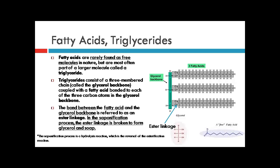Fatty acids are straight-chain monocarboxylic acids. They usually range in size from 10 to 20 carbons, and most often have an even number of carbon atoms, including the carboxyl group carbon. Fatty acids are rarely found as free molecules in nature, but are most often part of a larger molecule called a triglyceride. Triglycerides consist of a three-member chain, called the glycerol backbone, coupled with the fatty acid bonded to each of the three carbon atoms in the glycerol backbone.